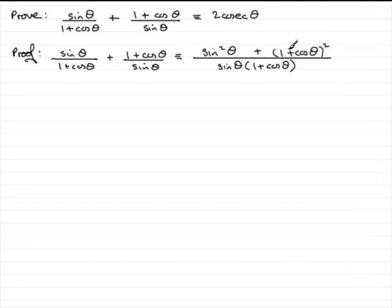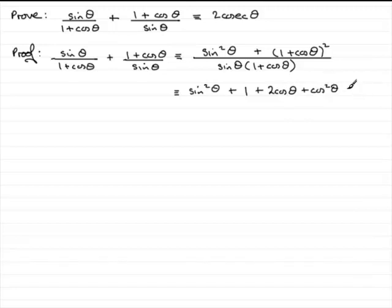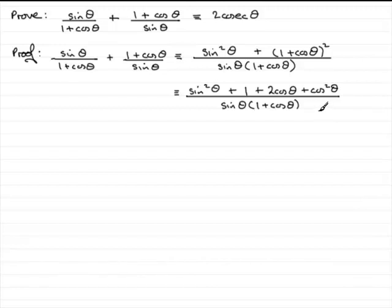Now we expand the top. We've got sine squared theta, plus 1 plus cos theta times 1 plus cos theta. Expanding that bracket: the first term squared is 1, then plus 2 cos theta, then plus cos squared theta. If you're unsure, just write two brackets on a scrap of paper — 1 plus cos theta times 1 plus cos theta — and you should get that. Don't multiply the bottom out; it's already one term consisting of two useful factors: sine theta and 1 plus cos theta.